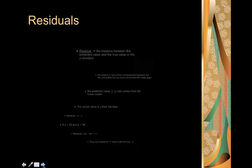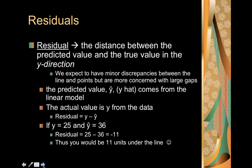So with a model, we're going to have what are called residuals. A residual is the distance between the predicted value and the true value in the y direction, in the vertical direction only. And we expect there to be some minor discrepancies between the line and the points, because the model is not going to be perfect. But we will be more concerned with large gaps.